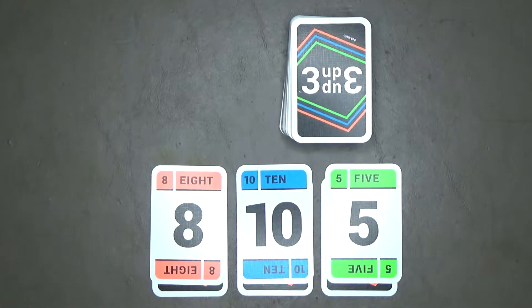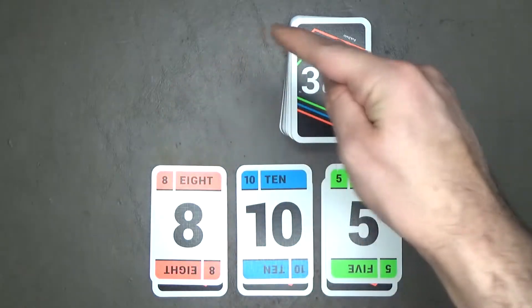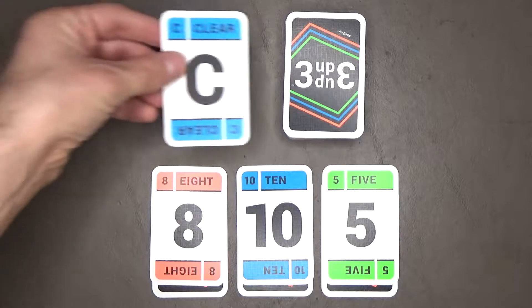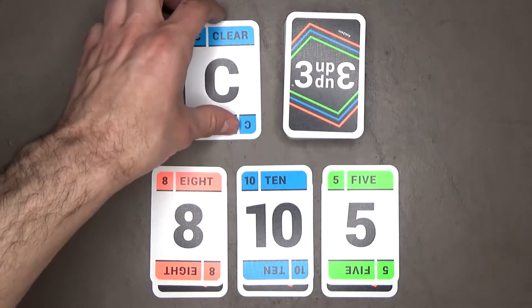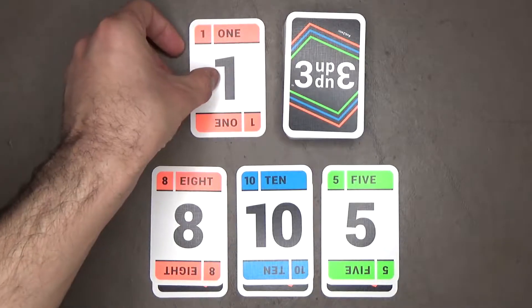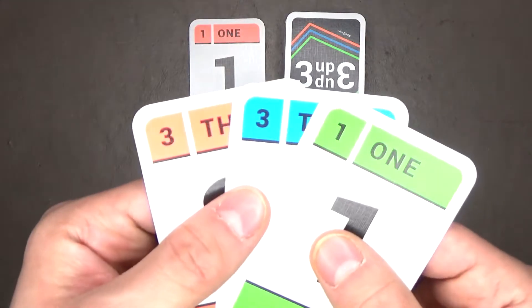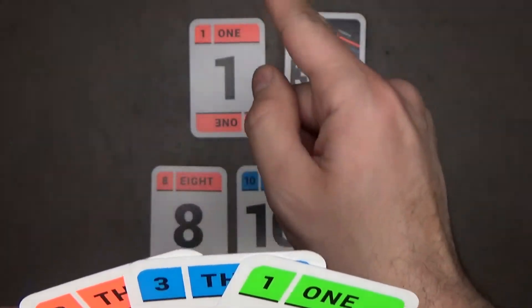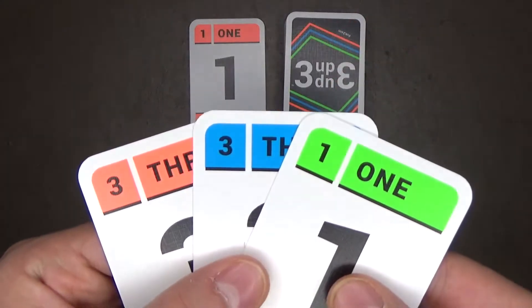The player left of the dealer goes first, and turn order goes clockwise. Players can play any card on an empty discard pile. You can start with a clear card if you want to, but I recommend instead that you start with any numbered card. Each player must play cards to the discard pile from their hands that either equals 2 or is greater than the top card of the discard pile, or play a clear card.